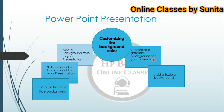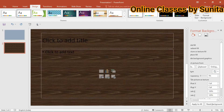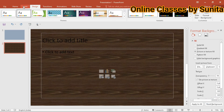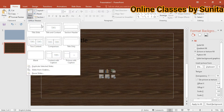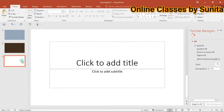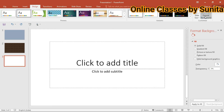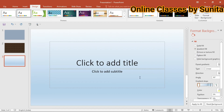Gradient होता है mixture of colors — आप दो colors use करके gradient बना सकते हैं। Add a new blank slide, फिर Design पर जाएं, Design के बाद Format Background पर जाएं। वहाँ Gradient Fill पे click करना है। जब मैंने choose किया तो by default sky blue color आ गया।